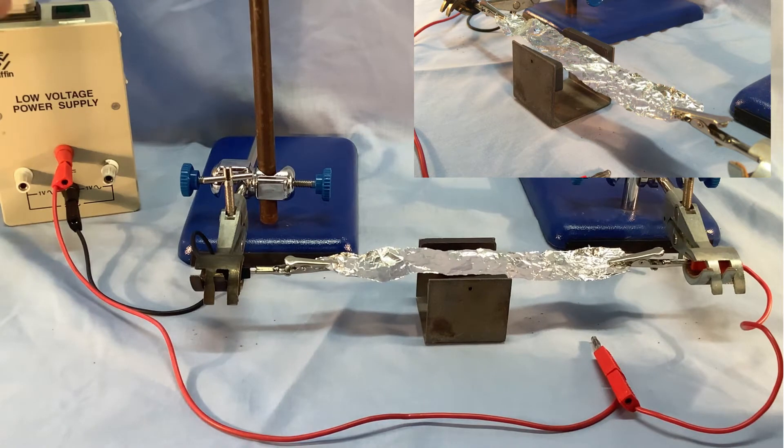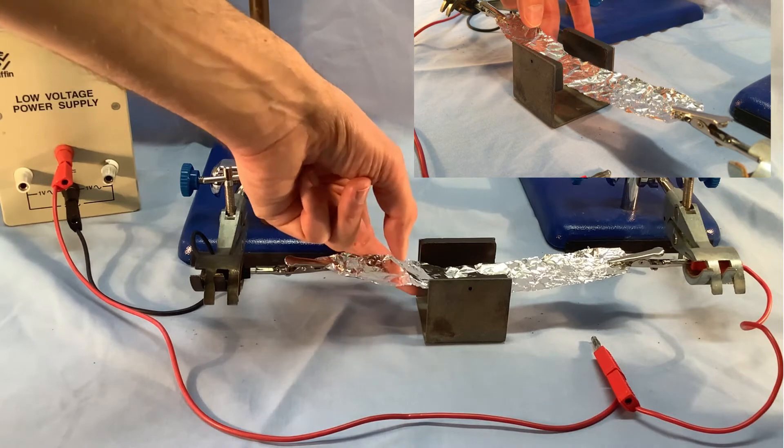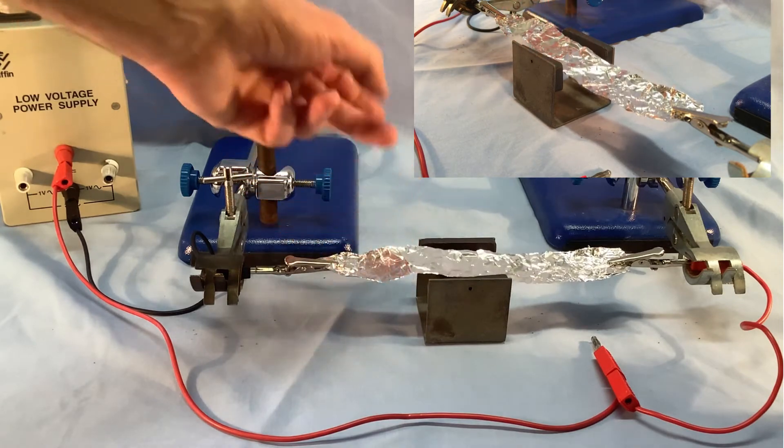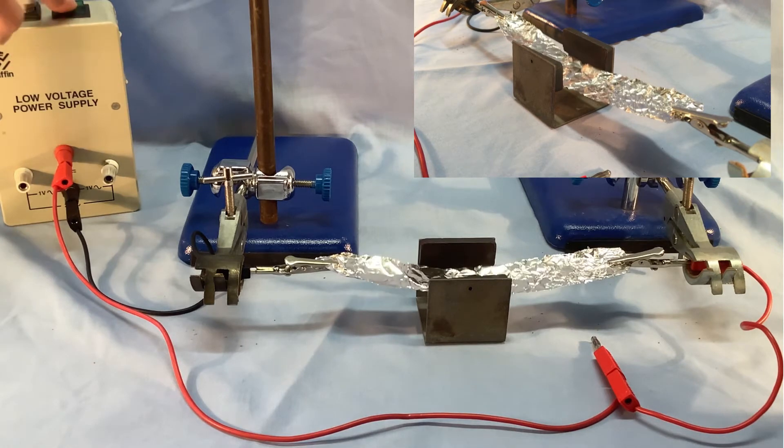So let's turn on the current and see what happens. Hopefully you could see that it moved down. I'll switch off the current - it's not good to leave it on for too long as the high current could have quite a big heating effect. Let's watch that again, turn it on and we can see that the foil experiences a force down.